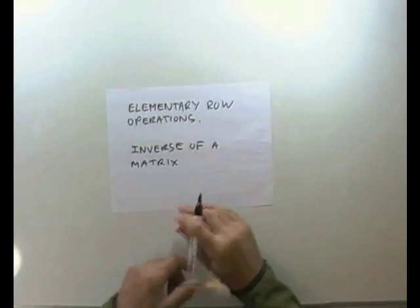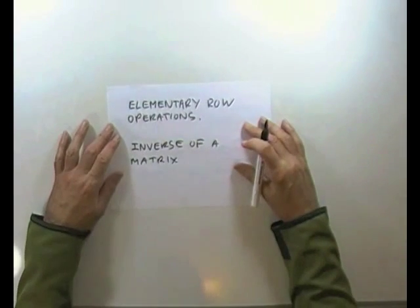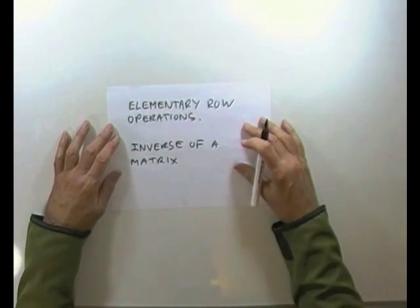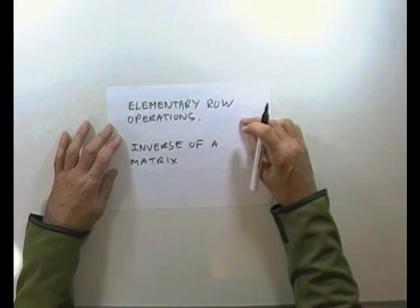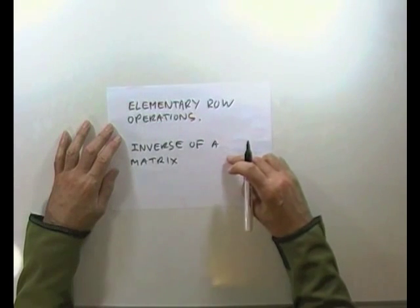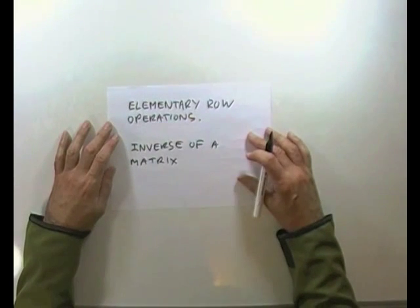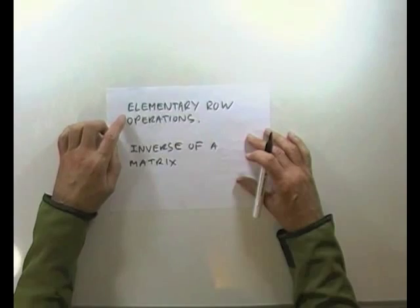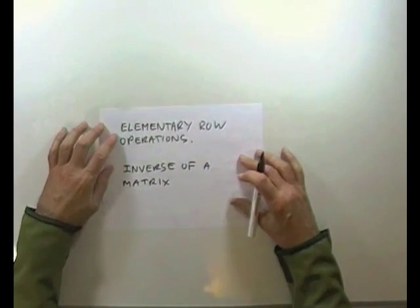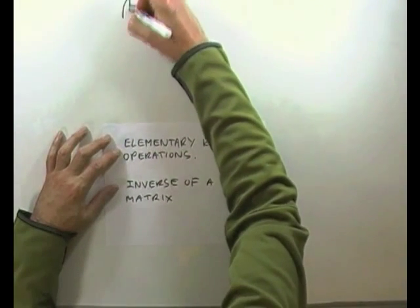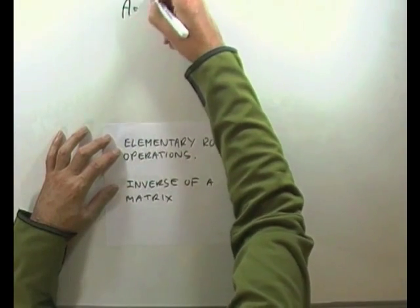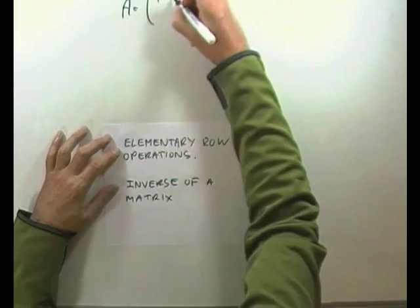Using elementary row operations to transform a matrix down to its identity element, on the way to finding the inverse of a matrix. But first of all, elementary row operations in a matrix. Take a simple matrix to begin with.